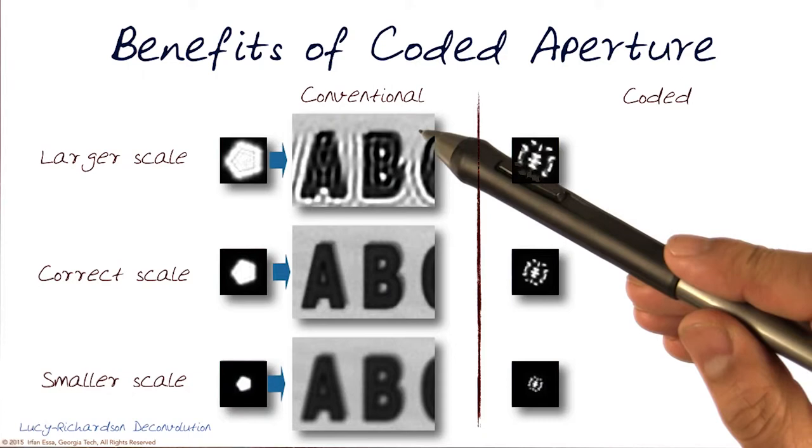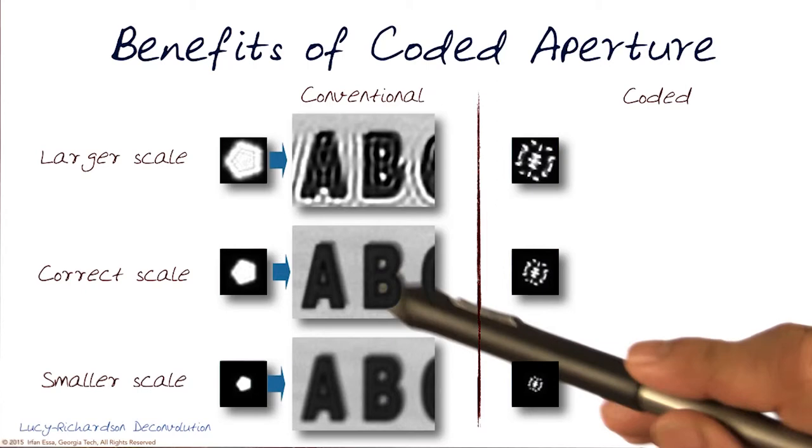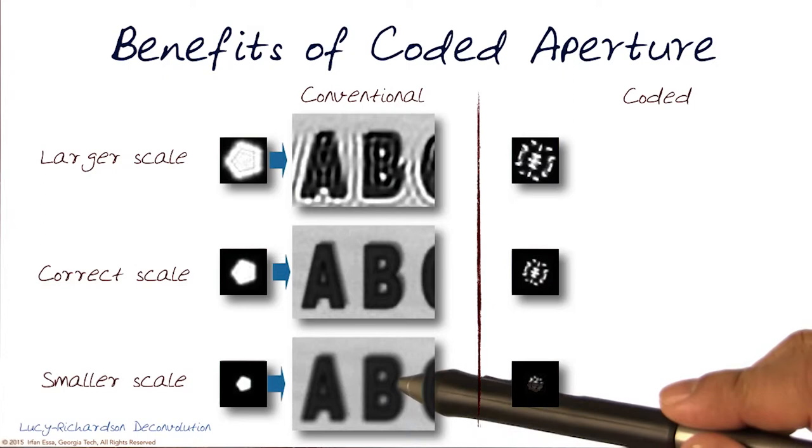Of course, we do it at the correct scale, so the size of the kernel matches the kind of signal that's in the original image. You'll do much better. But if you do it at a smaller scale, you actually will add other forms of blur.